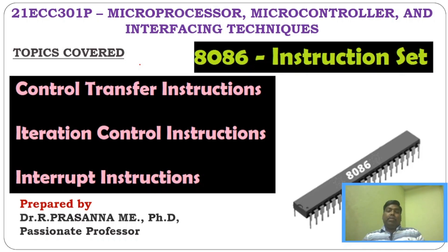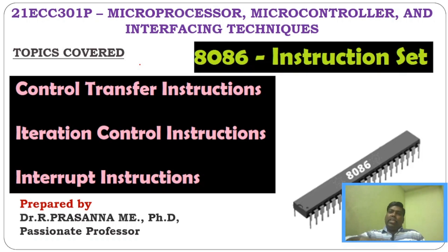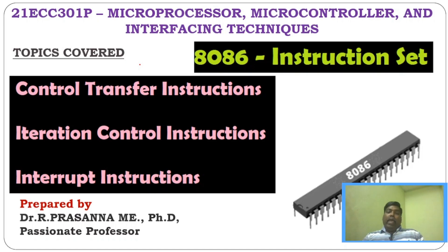Today we're going to see control transfer instructions, iteration control instructions, and interrupt instructions. Before starting, I'll repeat the definitions. Control transfer instruction — from the name, the control will be transferred to a different location. The instruction execution will be transferred to a different location; that is called a transfer or branch instruction. CALL, RETURN, and JUMP are all control transfer instructions.